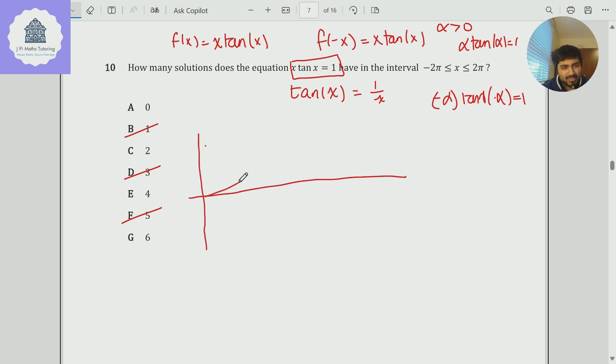So tan x looks something like this. You've got an asymptote here at π by 2. If you're preparing for the TMUA, you should know how to sketch these graphs with your eyes closed. So this is π over 2. This is π. This is 3π over 2. And that's 2π.